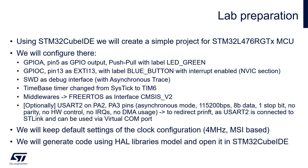Optionally you can configure USART2 on PA2 and PA3 pins in case you would like to redirect printf to this interface. USART2 is connected to the onboard ST-Link and is visible via virtual COM port on your PC. To simplify the configuration we will keep the default clock configuration for 4 MHz based on the MSI oscillator. After this configuration we will generate the code using the Hardware Abstraction Layer (HAL) library and open it in STM32CubeIDE.